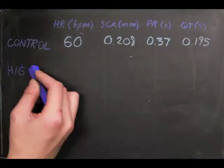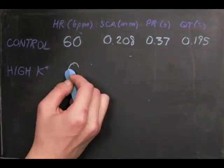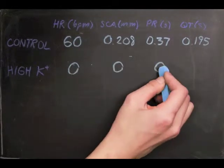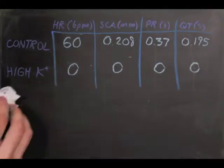This is shown in our results. With the treatment of high concentrations of potassium, the heart eventually stopped, resulting in no waves in the ECG or SCA to take measurements from.